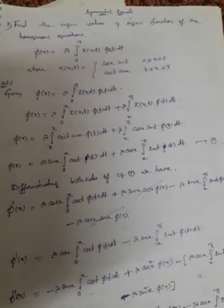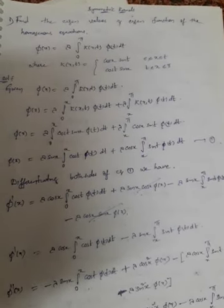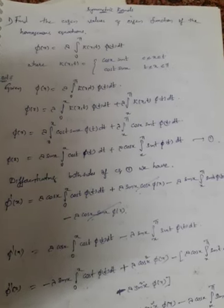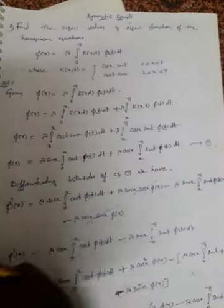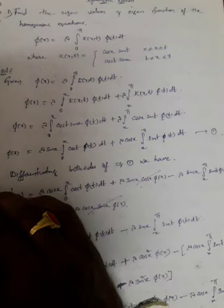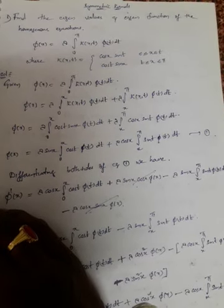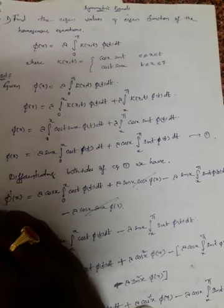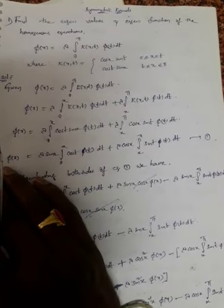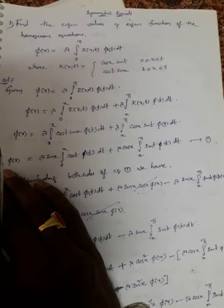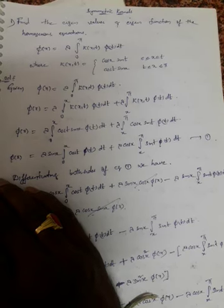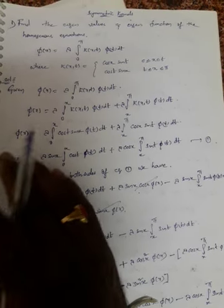Dear students, today we are going to discuss one more problem for the topic symmetric kernels. Yesterday we saw in one of the videos how to find the eigenvalues and eigenfunctions. Now for the symmetric kernel, what are symmetric kernels? The kernel k(x,t) can be taken as k(t,x), meaning k(x,t) is equal to k(t,x). Such type of kernels are called symmetric kernels.